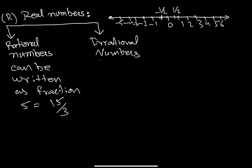Irrational numbers are those numbers which cannot be written as a fraction — they cannot be written as P over Q, or A over B, or whatever alphabet you choose. The numerator and denominator should give you the number; if no such integers exist, it is an irrational number.